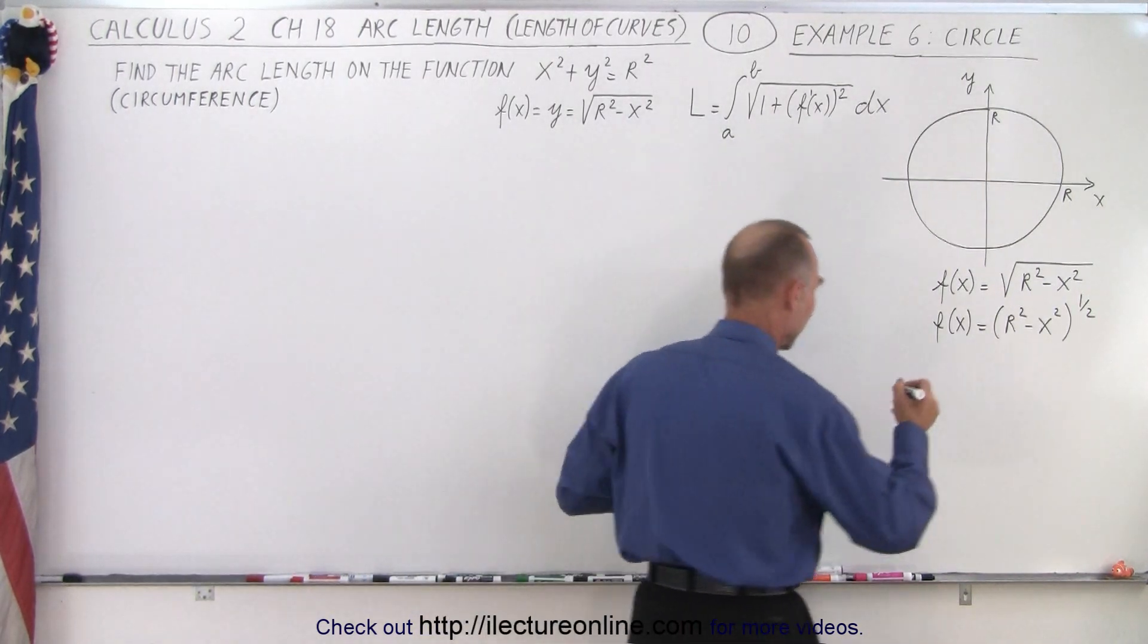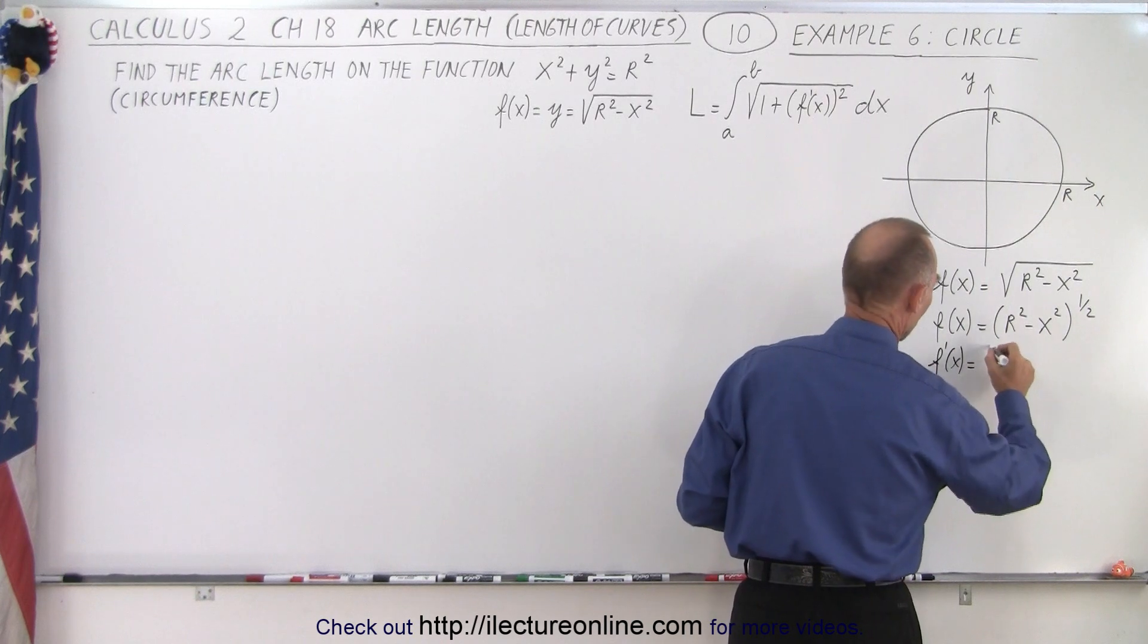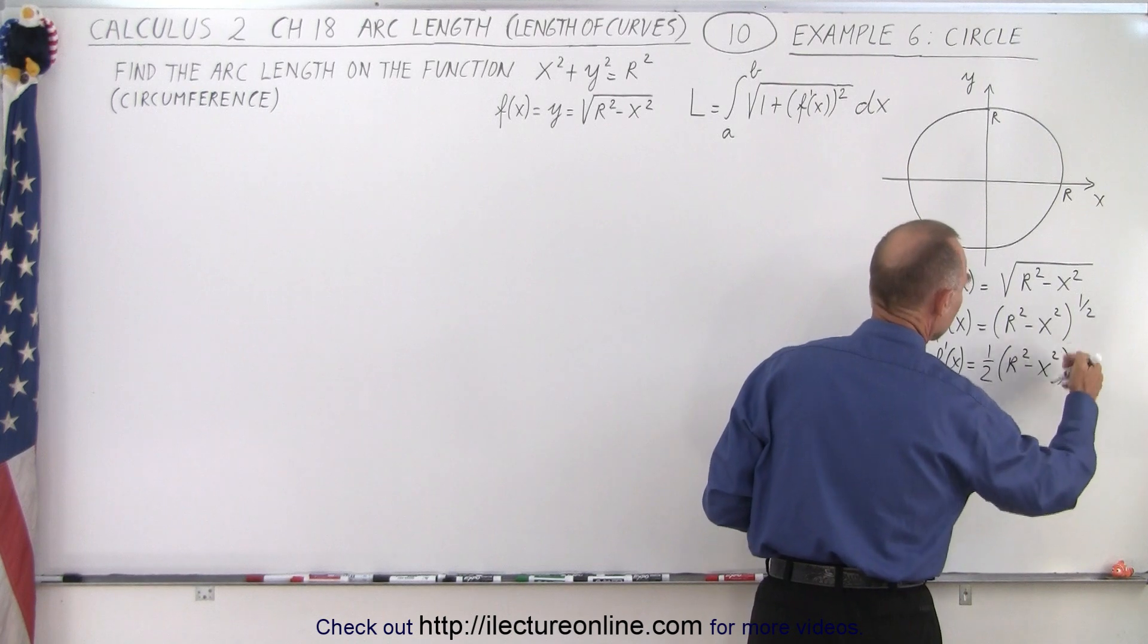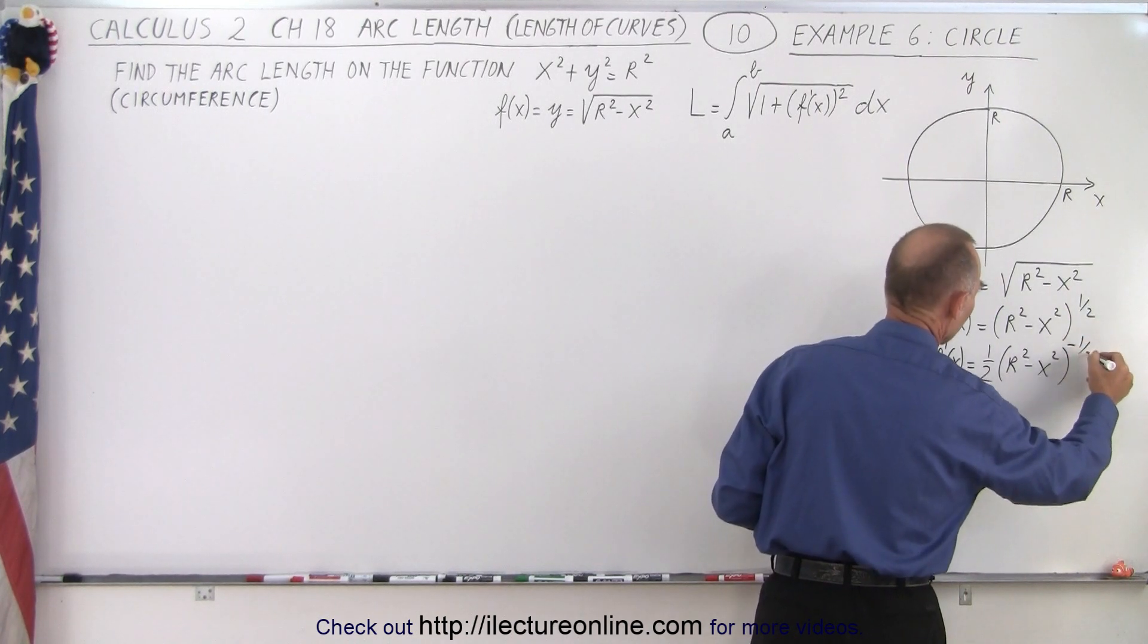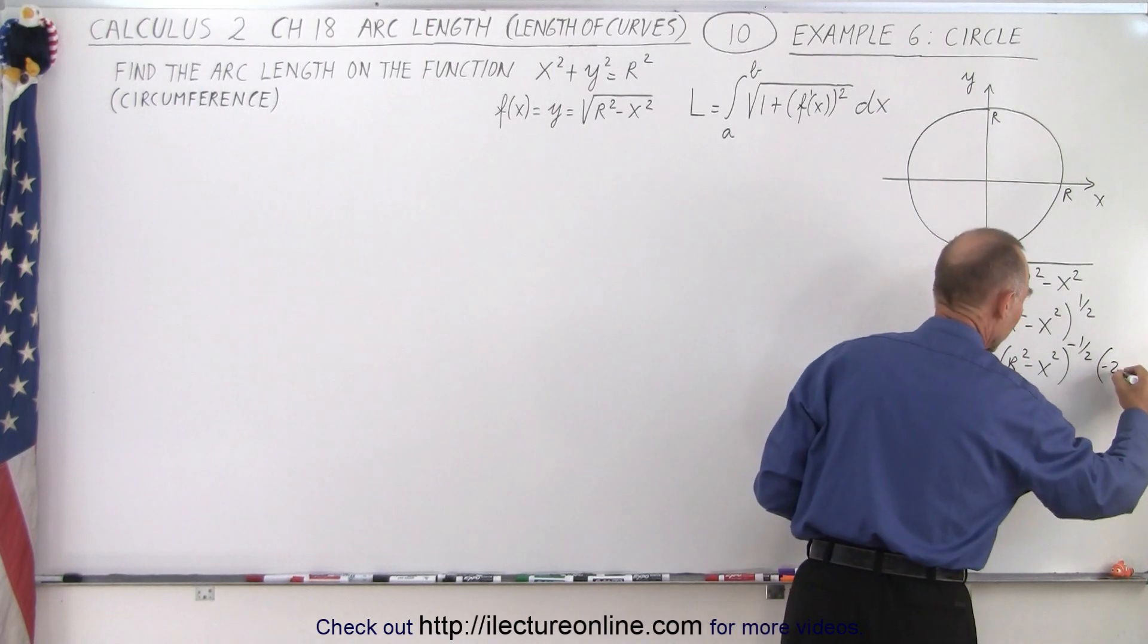So now we take the derivative of that. So we take f'(x). And so that's equal to one half times r² - x² to the exponent of minus 1, which is minus one half, times the derivative of what's inside, which would be minus 2x.